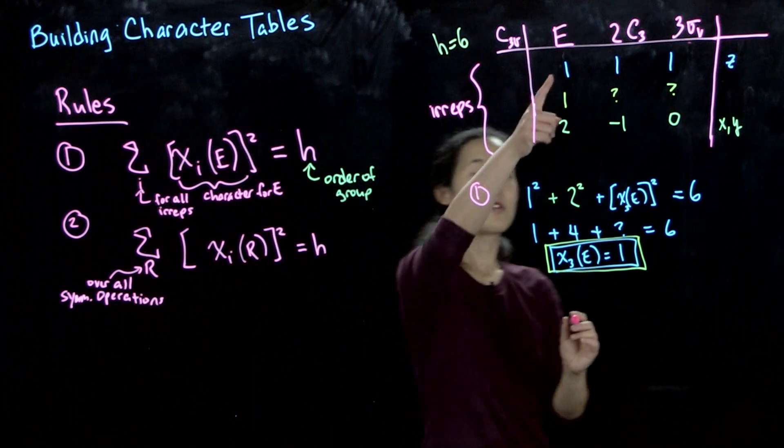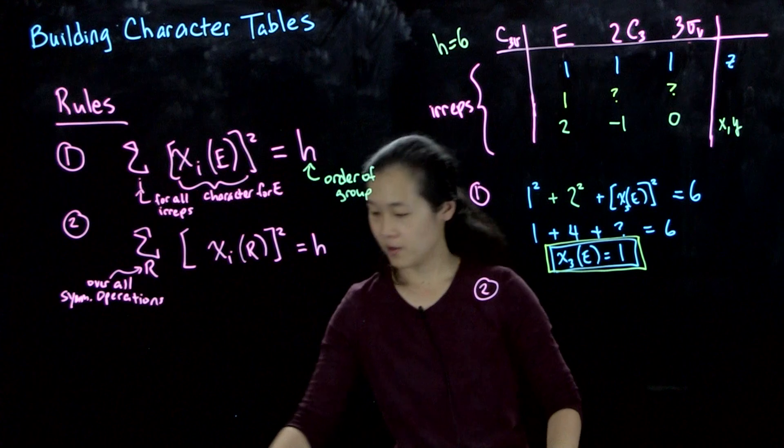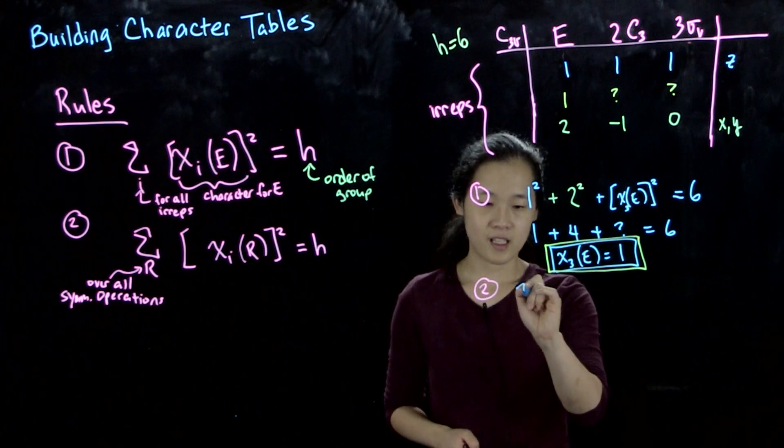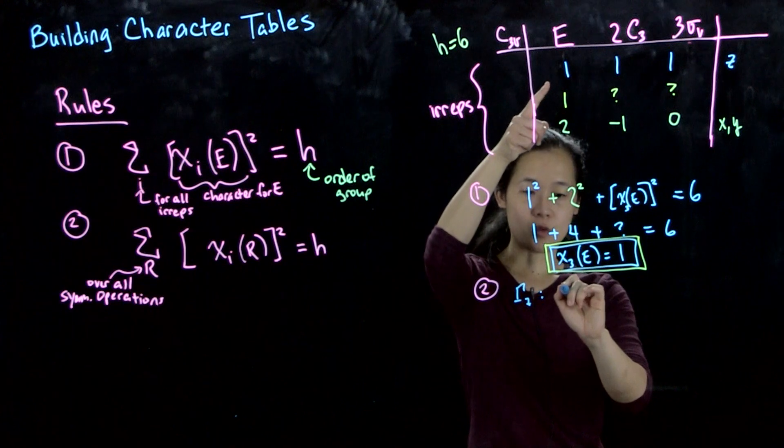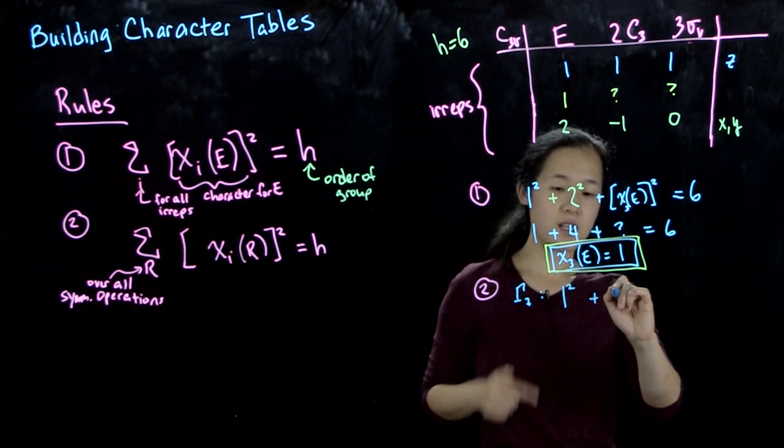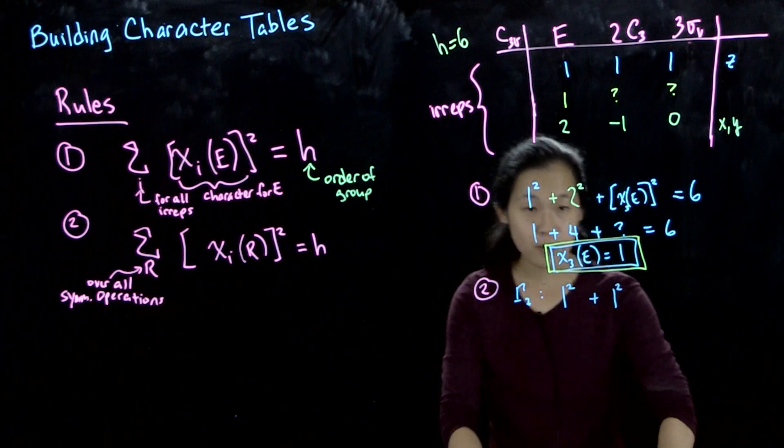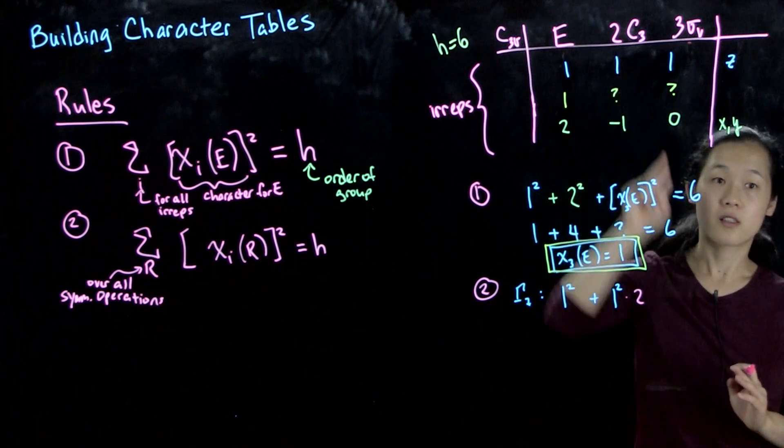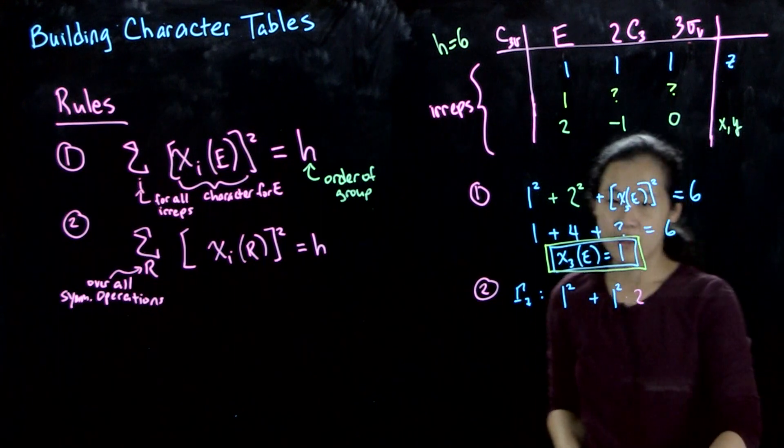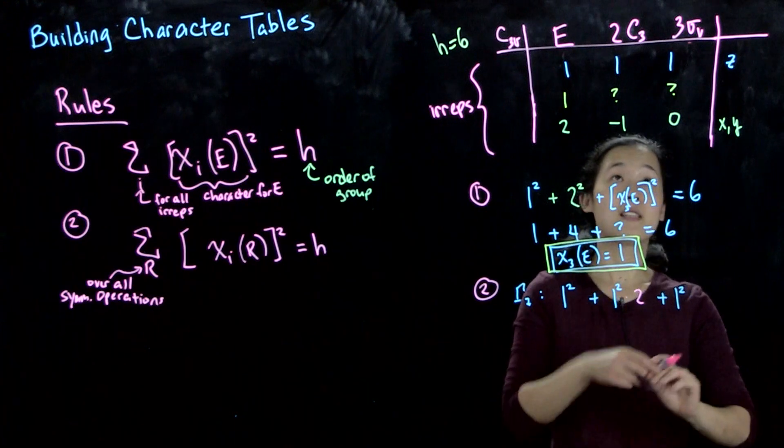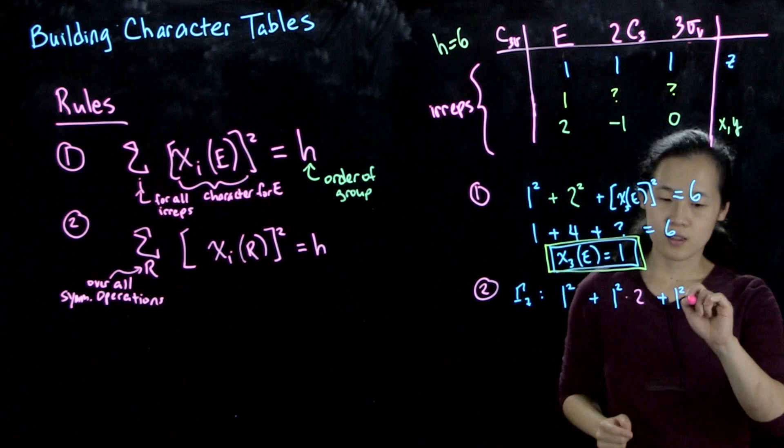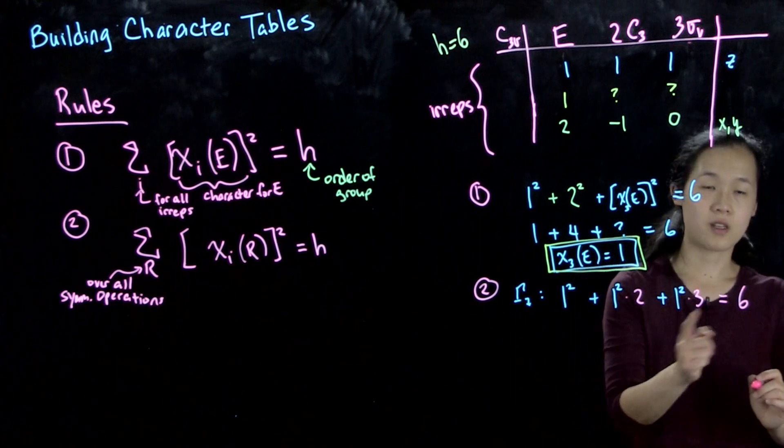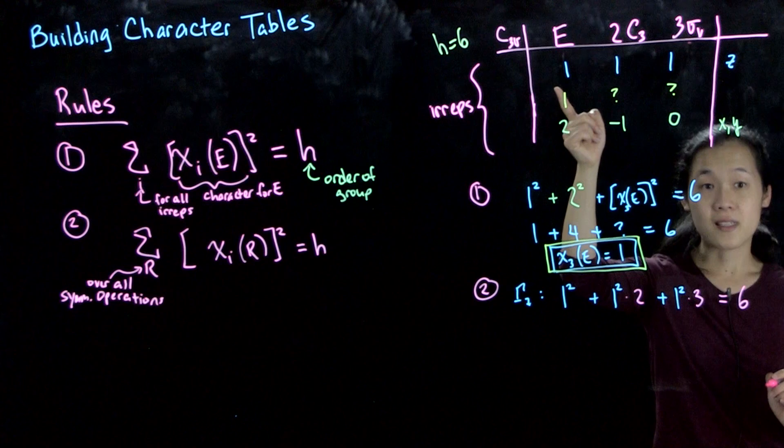So to test this out, let's first go across here. So what we're saying is, the character as we go across for gamma Z, the character for E is 1 squared, plus the character for C3 squared. And this time, I'm going to multiply this by 2, because there's two C3s. Remember, we're summing over every single operation. So this C3 counts as two operations, even though they're in the same class. And then we'll add 1 squared times 3. Does this equal 6? It does. 1 plus 2 plus 3 equals 6. So we're checking out that this is indeed an irreducible representation.